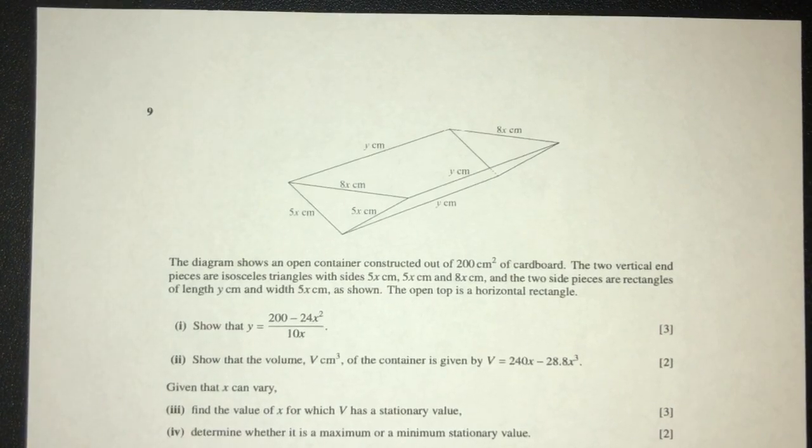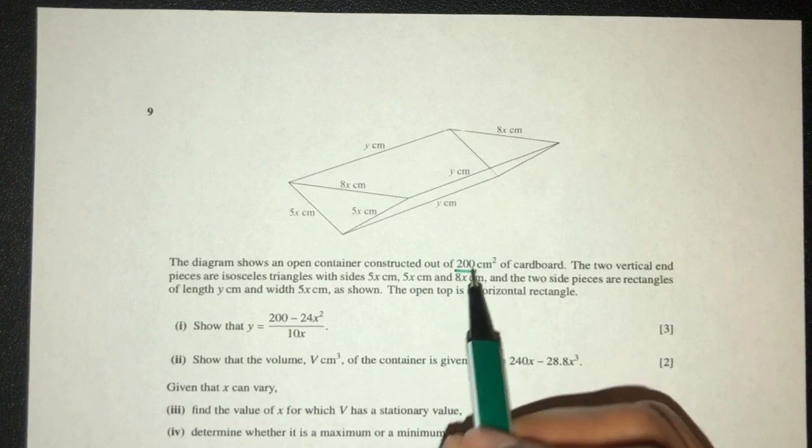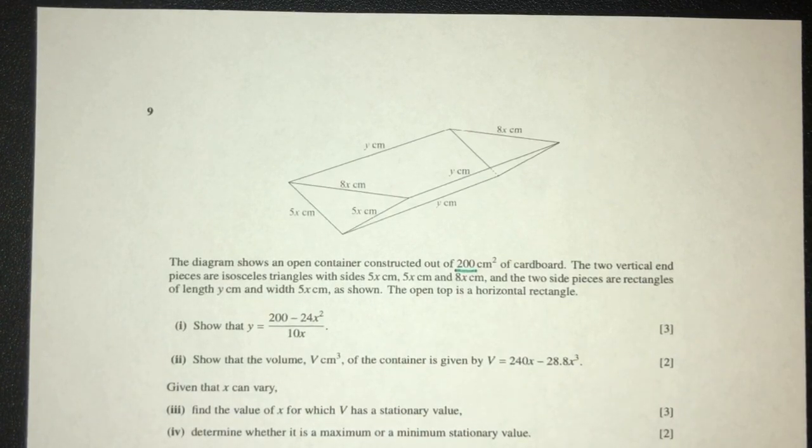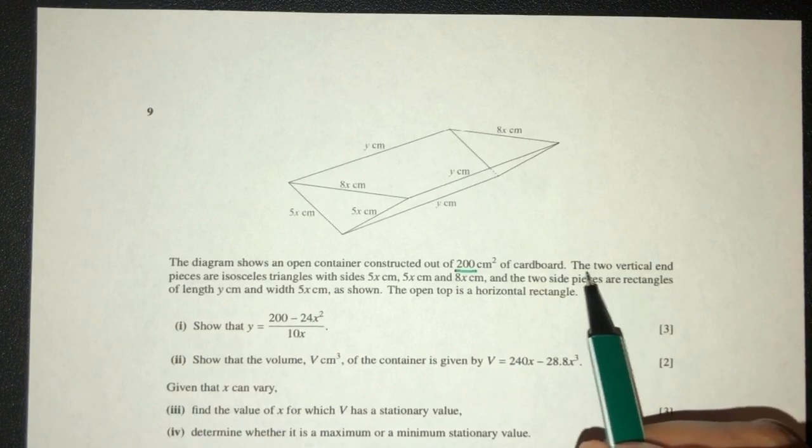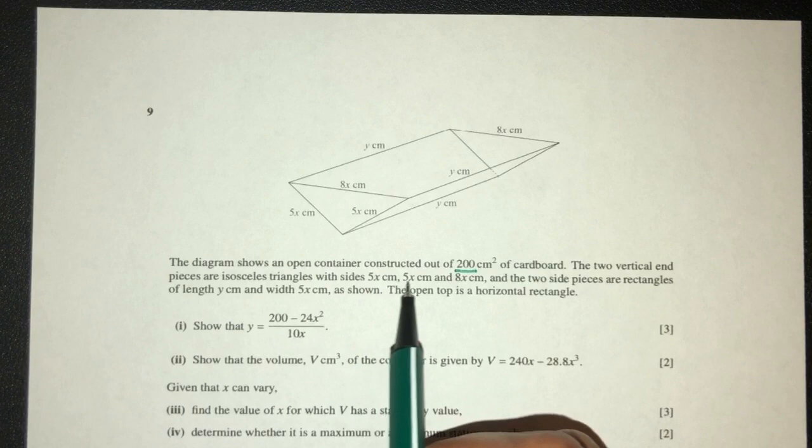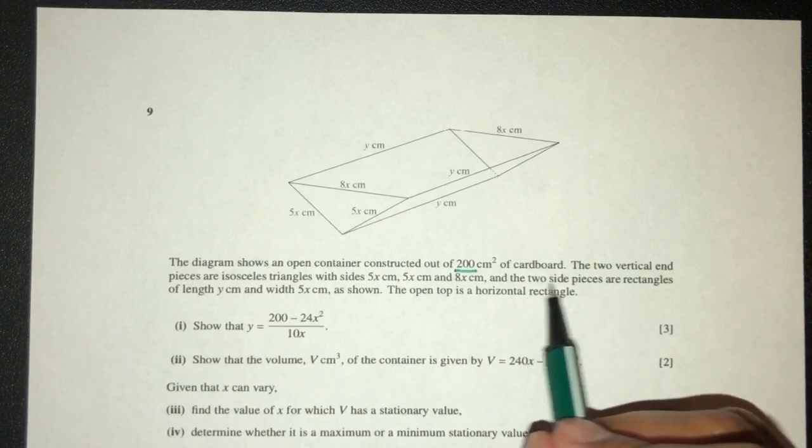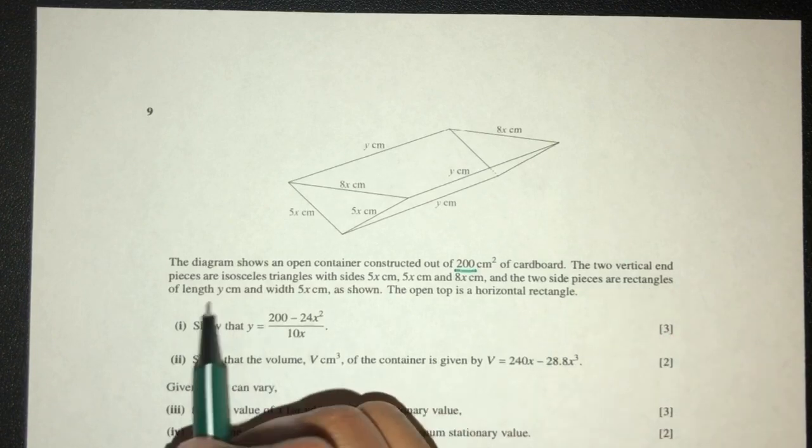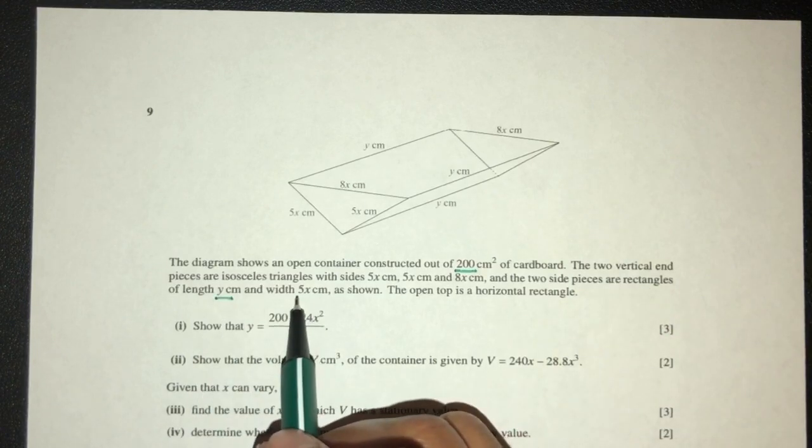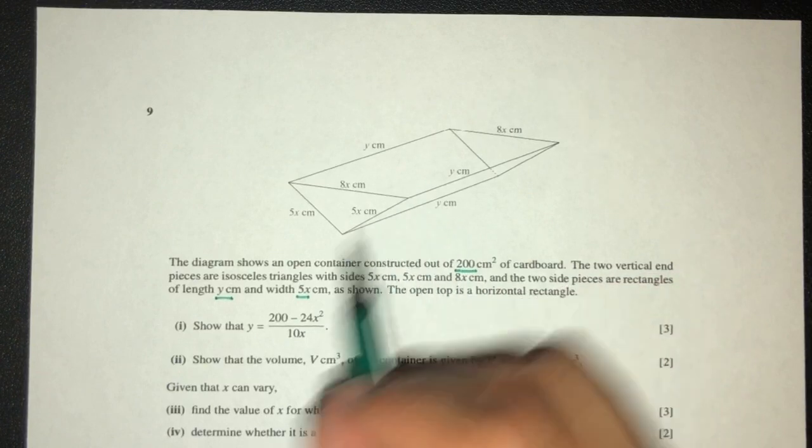Let's move on to the next question. The diagram shows an open container constructed out of 200 centimeter cube of cardboard. The two vertical end pieces are isosceles triangles with sides of 5x, 5x, and 8x as we can see here. The two side pieces are rectangles of length y and width 5x.